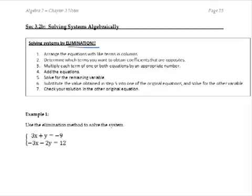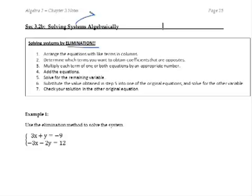Alright ladies and gentlemen, hang with me here. This is section 3.2b where we're still solving systems, meaning we are still looking for some x comma y as our answer. We're doing it algebraically and we're using the elimination method.